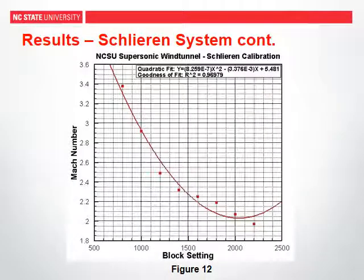Following the same method, the Schlieren calibration is also modeled with a quadratic line of best fit. The R-squared value for this model is 0.97, which is significantly greater than all the previous data trend lines.